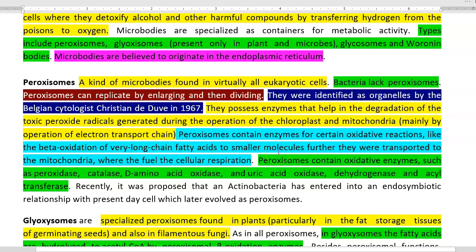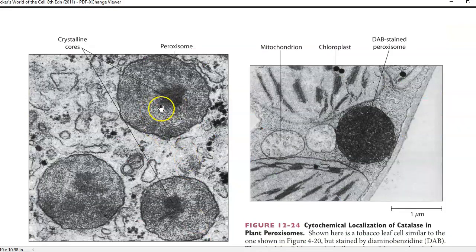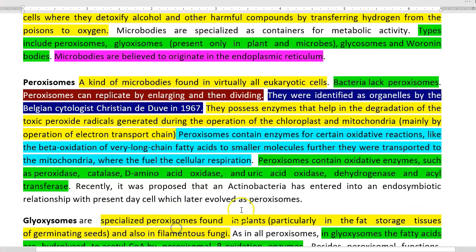Peroxisomes contain enzymes important for various oxidative reactions, like beta-oxidation of very long chain fatty acids into smaller molecules. These smaller molecules are then transported to mitochondria to fuel cellular respiration. Peroxisomes also contain other oxidative enzymes including peroxidase, catalase, oxidase, uric acid oxidase, dehydrogenase, and acyltransferases. Catalase is present in the crystalline core of the peroxisome. A recent hypothesis suggests peroxisomes have an endosymbiotic origin from an actinobacteria with a eukaryotic cell.